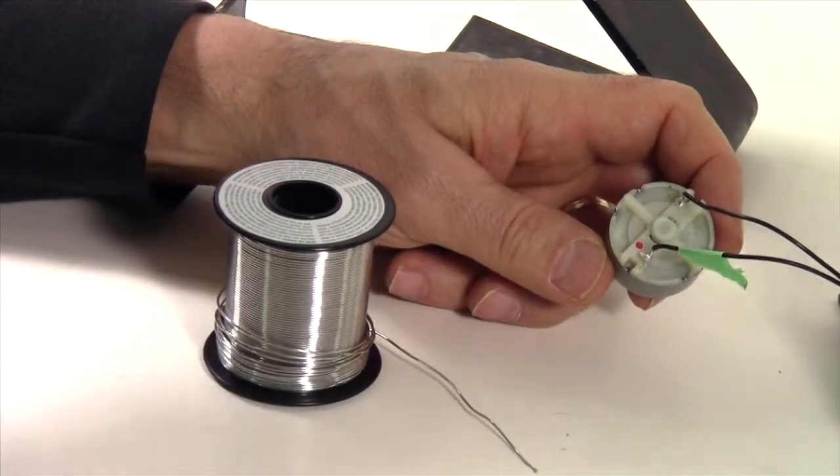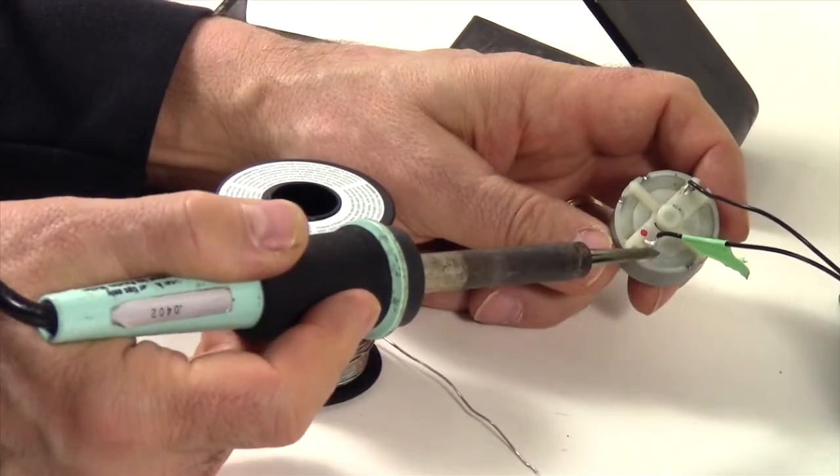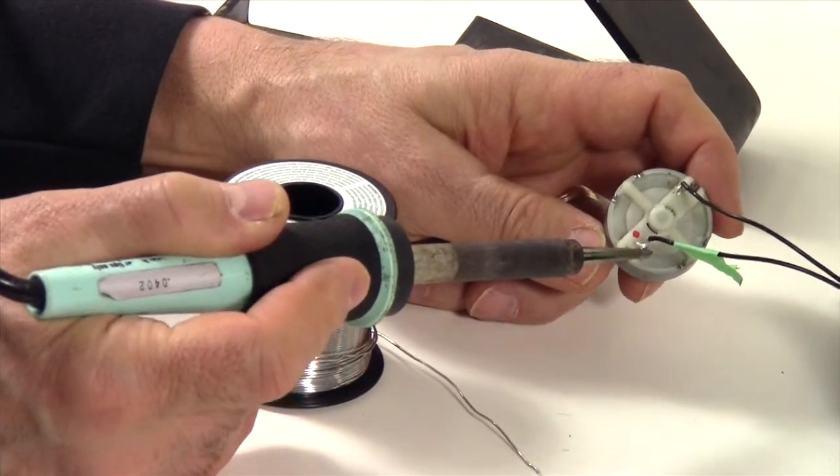Now we're going to use our soldering iron to remove or unsolder the wires.